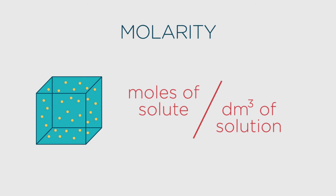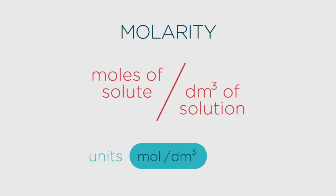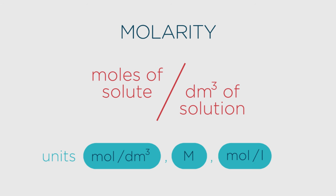When we're describing the molarity of a solution, we always mean the number of moles of solute per decimetre cubed of solution. You'll often see it written like this, or more simply, like this. A cubic decimetre is also commonly called one litre.